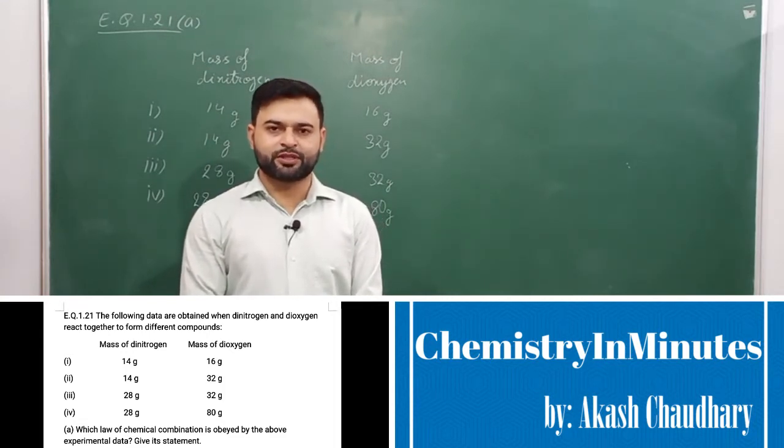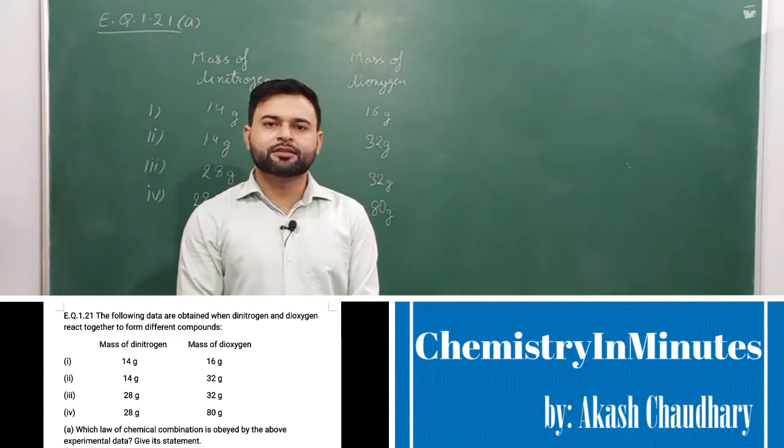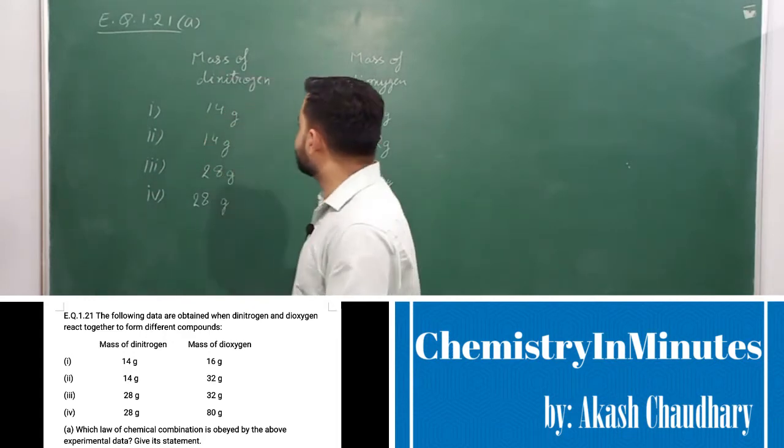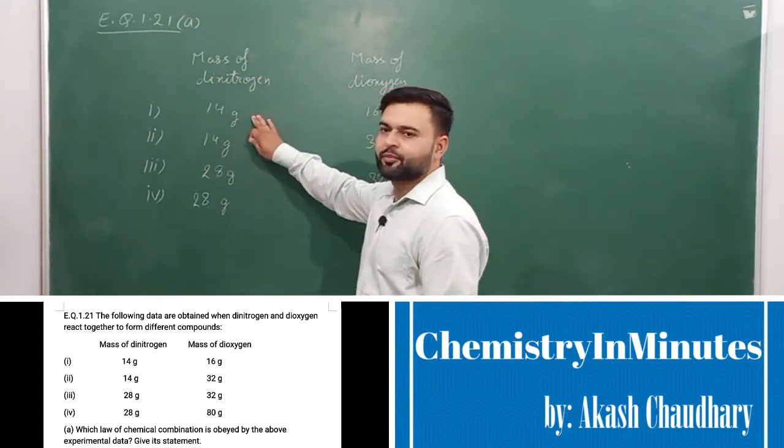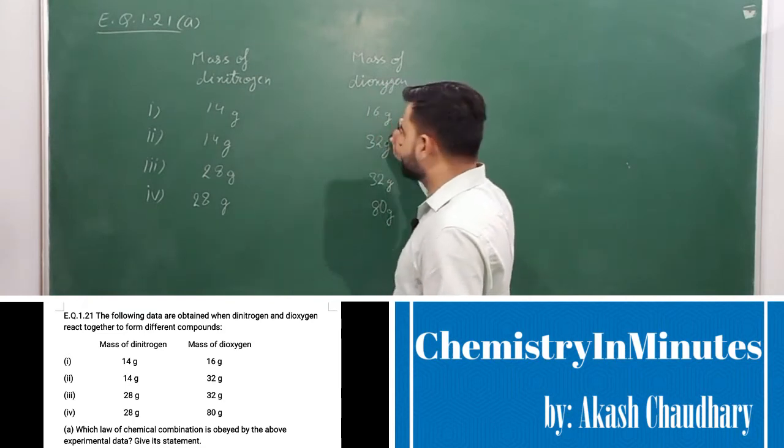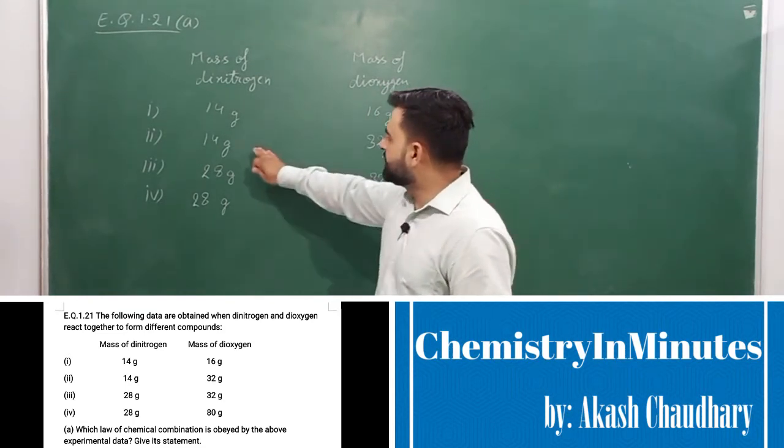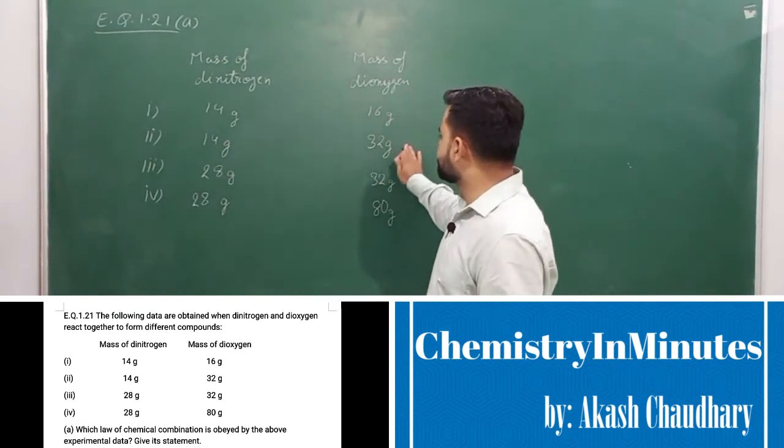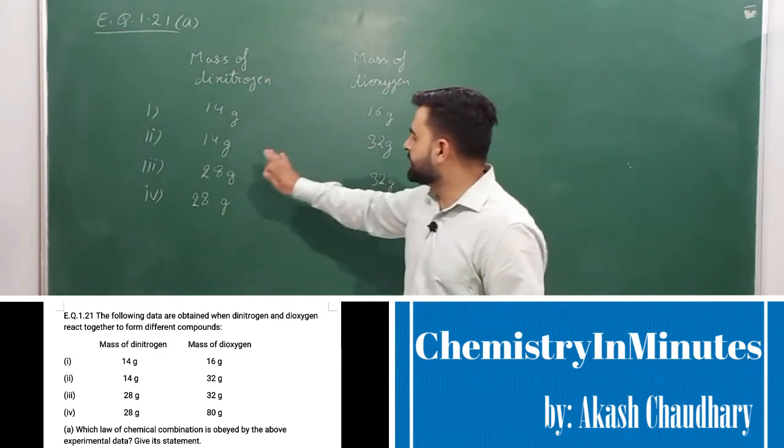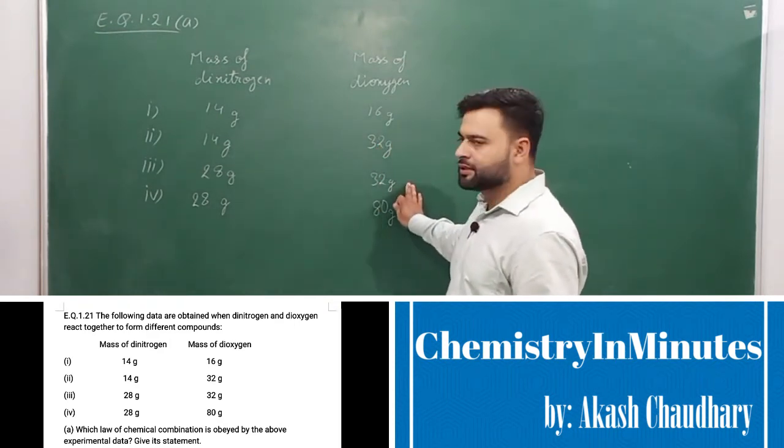So, let's write the answer to the question. So, data is written here. 14g of dinitrogen is reacting with 16g dioxygen, similarly 14g dinitrogen is reacting with 32g, then 28g is reacting with 32g.